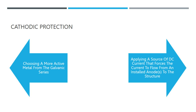The second basic method is applying a source of DC current that forces the current to flow from an installed anode to the structure, causing the entire structure to be a cathode — this is called impressed current cathodic protection. The circuit includes a rectifier, solar cell, battery, generator, or another DC power source. The environment and the metal that needs to be protected determines how much current is needed. To achieve protective potentials, current must flow from the anode to the structure being protected.